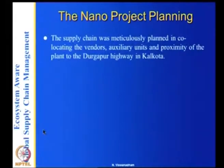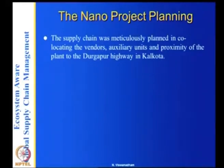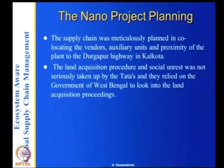The supply chain was meticulously planned because it was a one-lakh, low-cost car, so you have to minimize cost at every place. Vendors were co-located so transport costs were minimal, auxiliary units were in proximity to the plant near the Durgapur Highway in Kolkata, West Bengal, and it was closer to the port so transportation was also cheaper. However, land acquisition procedures and short-term risks were not seriously taken by Tata's.